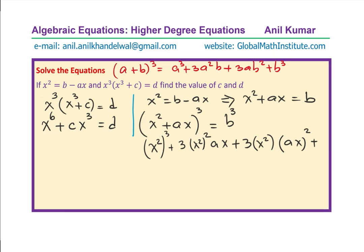Expanding gives us: x to the power of 6, plus 3·x to the power of 5·a, plus 3·x to the power of 4·a squared, plus a cubed·x cubed equals b cubed.